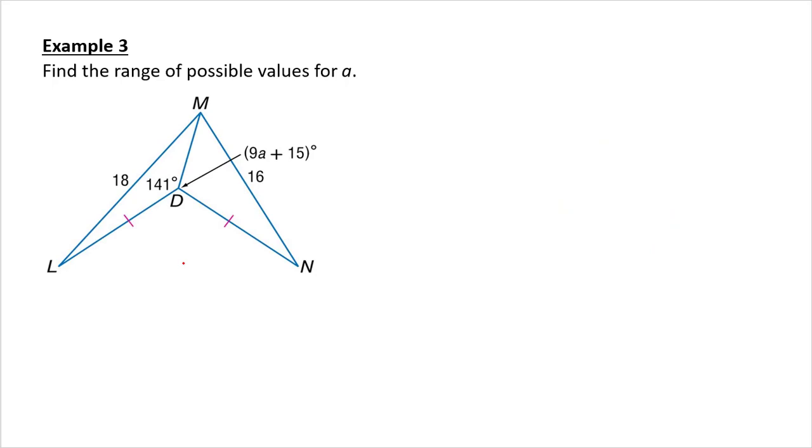Okay, find the possible range of values for a. Okay, so let's look at this. I have LD congruent to DN. I have DM congruent to itself. Since 18 is bigger than 16, 141 must be greater than 9a plus 15.